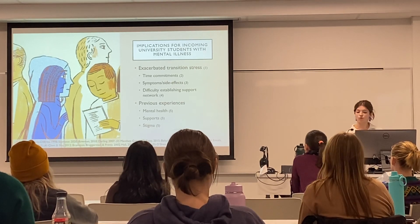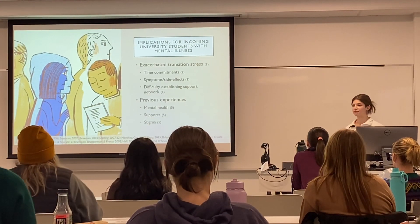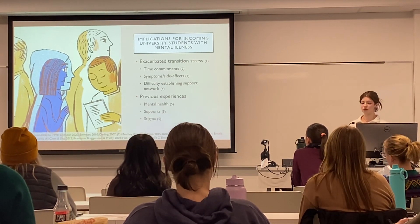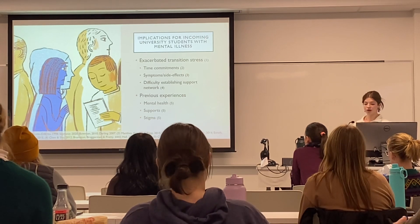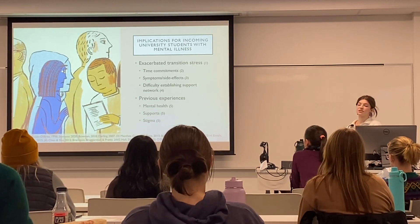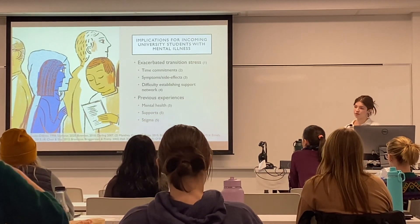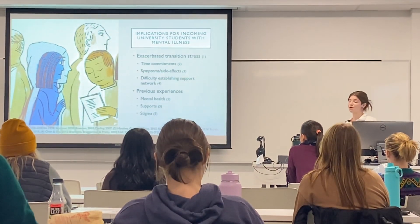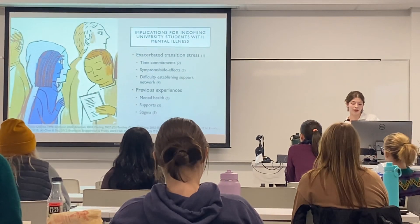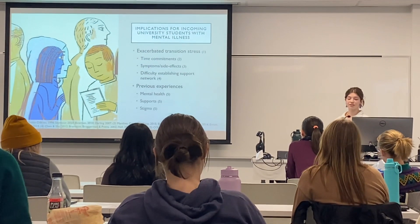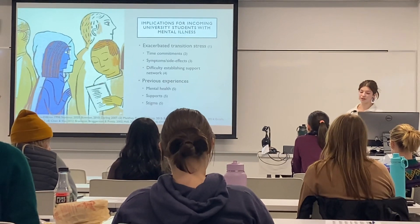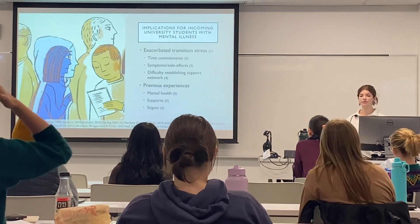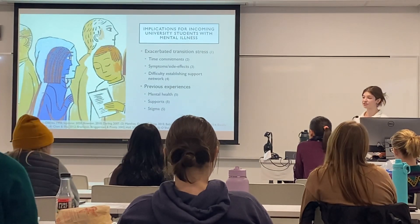Second, they might enroll in university with a pre-existing history of mental health treatment and support use, which can influence their attitudes towards help-seeking on campus. O'Shea and Mayer found that the more services a student had accessed in high school was associated with a relative degree of access to supports and programs. They could also have had negative experiences disclosing a mental illness disability, which could stop them from wanting to disclose in a post-secondary setting, ultimately limiting their access to services on campus.